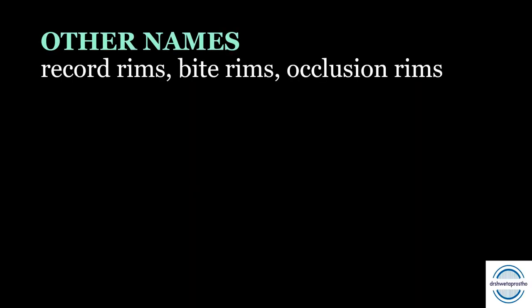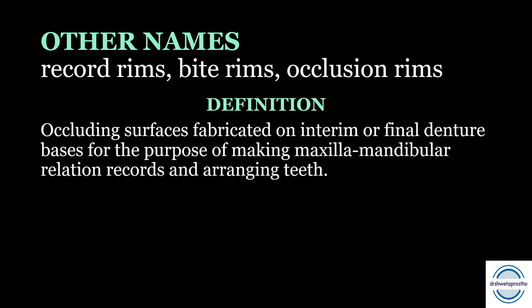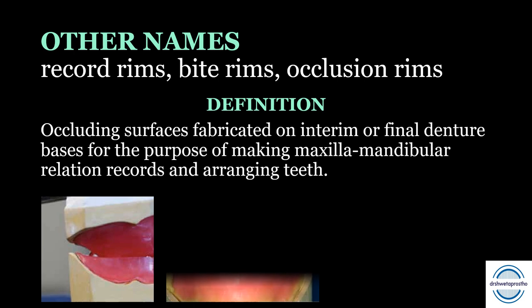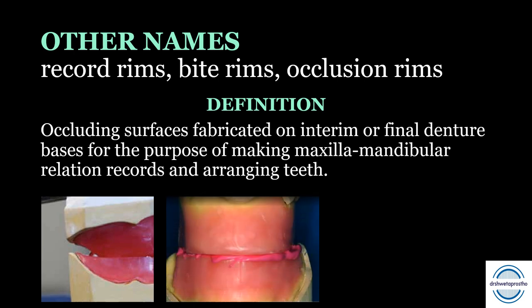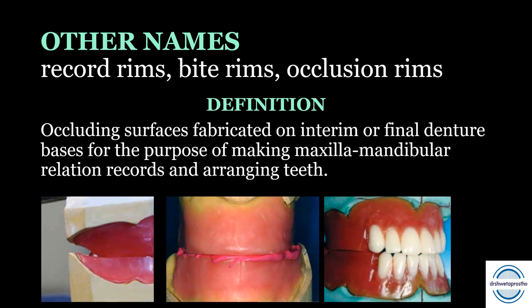Occlusal rims are also called by other names like record rims, bite rims, and occlusion rims. The definition of occlusal rims: they are the occluding surfaces fabricated on interim or final denture bases for the purpose of making maxillomandibular relation records and arranging the teeth. So the occlusal rim helps us to record the jaw relations and arrange the teeth.